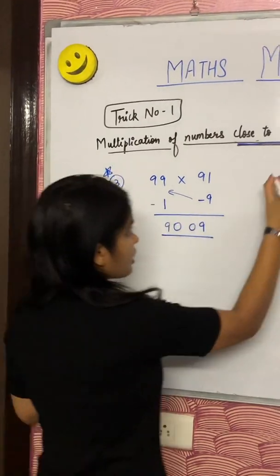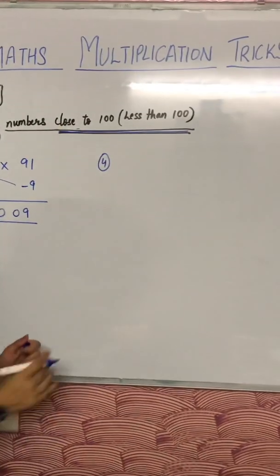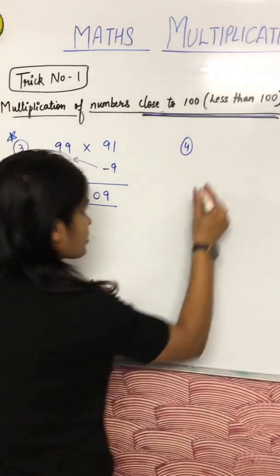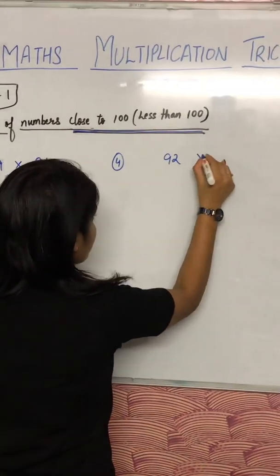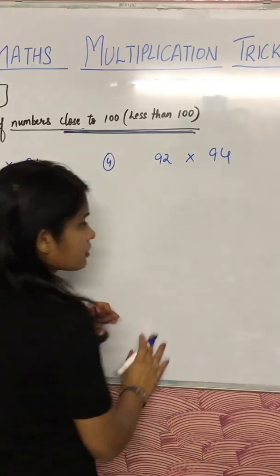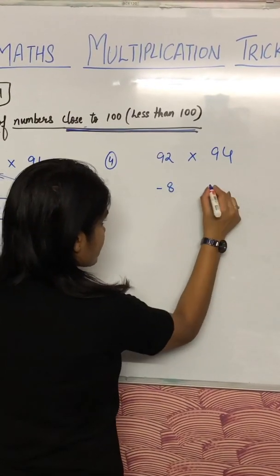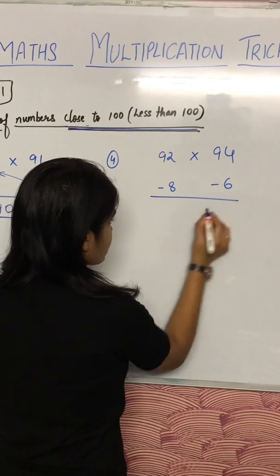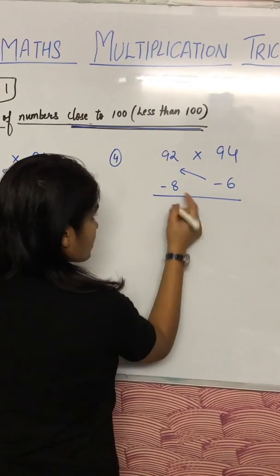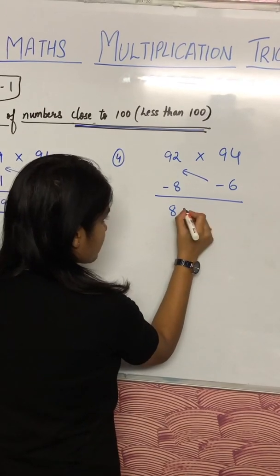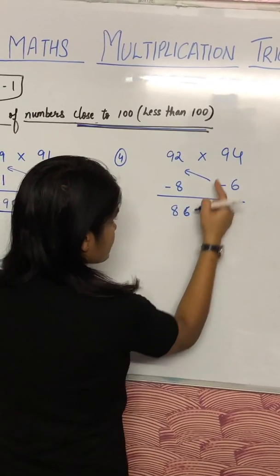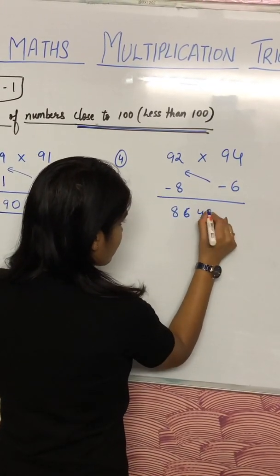So this is quite important for you. And one more. You have to be faster in this, mujhse bhi zyada fast. 92 into 94. So, 100 se minus kiya: minus 8. This will give you minus 6. You can do both ways, I have told you. 92 minus 6, kitna milega? 86. Then, 8 sixes are 48.